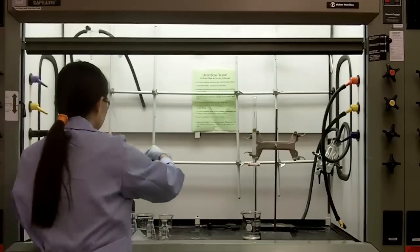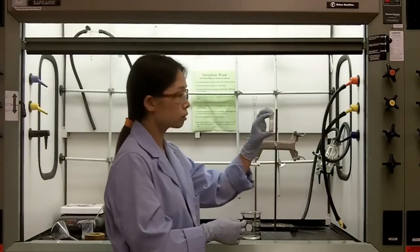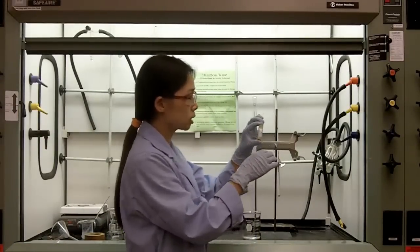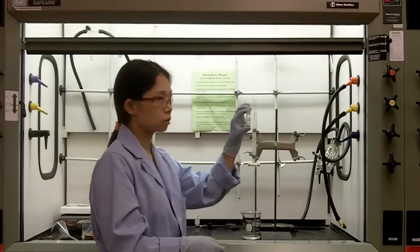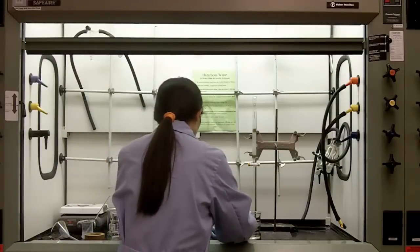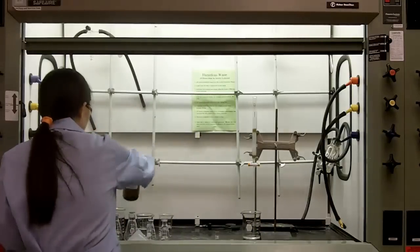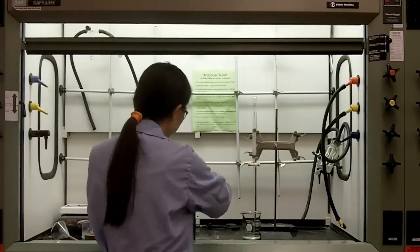And lastly, to prepare your unknown solution. Your unknown is provided in a little vial. Don't forget to take the weight of the vial and the sample together. You need to calculate the recovery rate. So we have the unknown ready. And then, we use the least amount of methylene chloride to dissolve it.